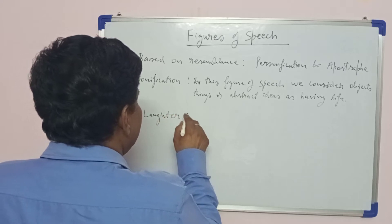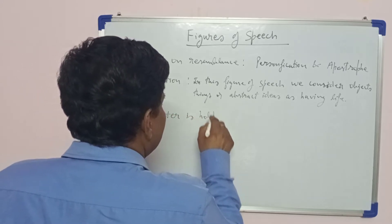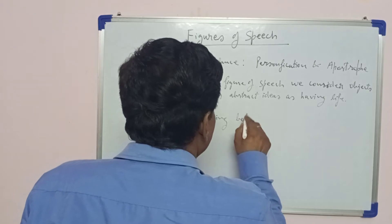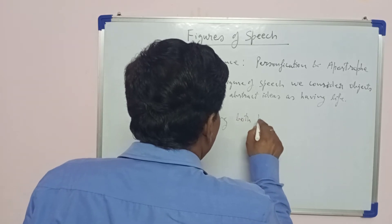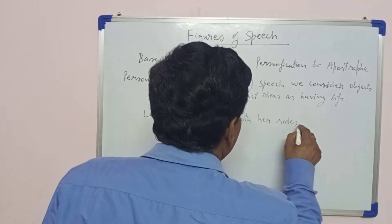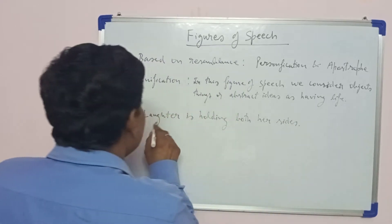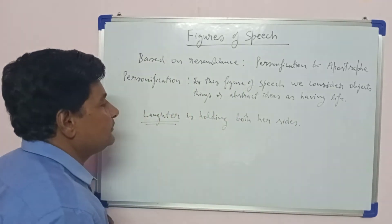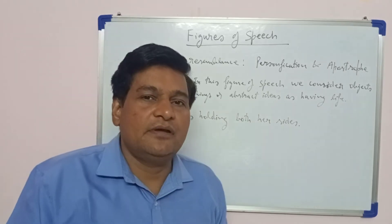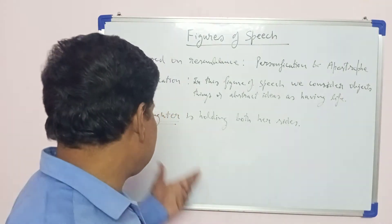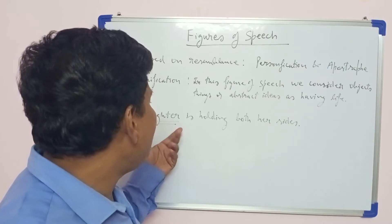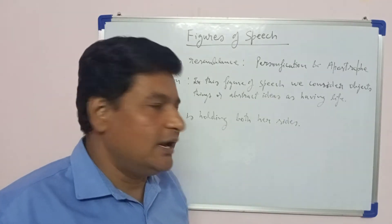Example: 'Laughter is holding both her sides.' Here, laughter is considered as a human being — it is an abstract idea which is considered as alive.